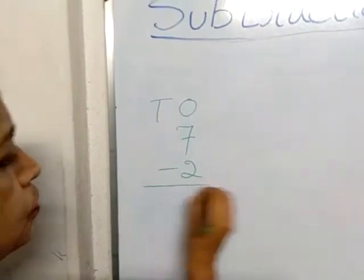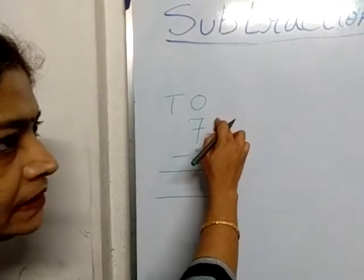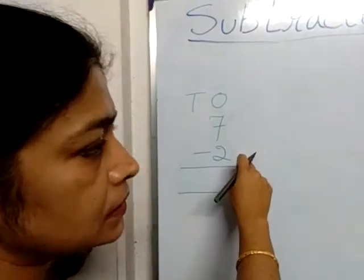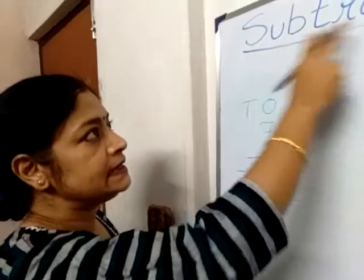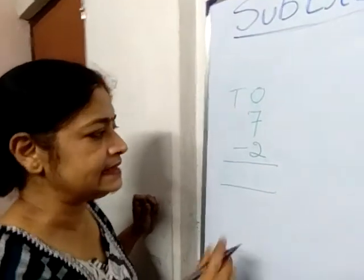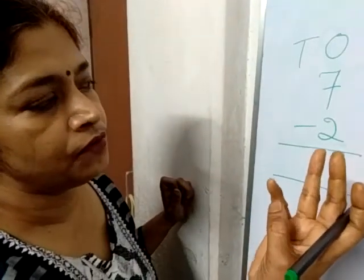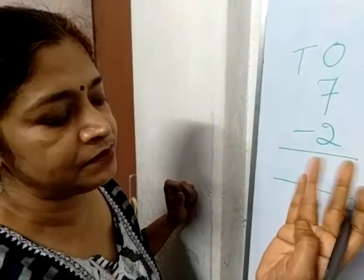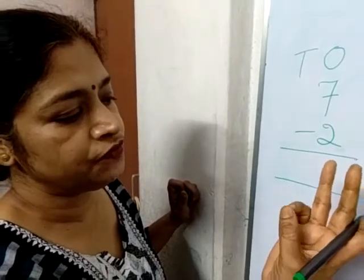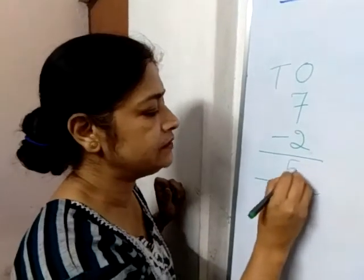7 minus 2. 7 is the big number and 2 is the small number. Subtraction means less than. So start at 2. From 3, 4, 5, 6, 7. Count 1, 2, 3, 4, 5. You write 5 here.